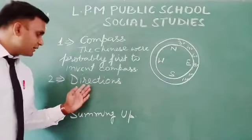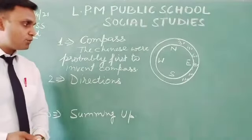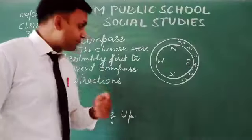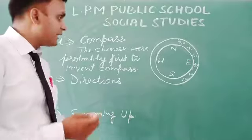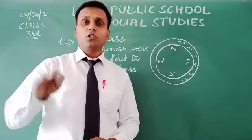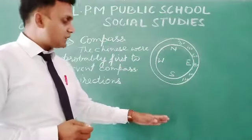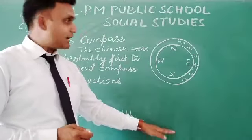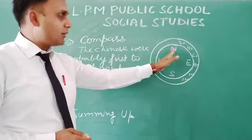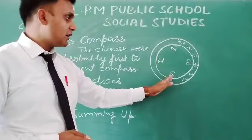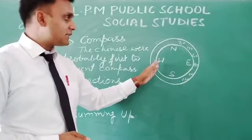Now, come to the second point: directions. When we look at a map on a flat surface, we see that on top of the map it is always the north side, and just below that it is south. As we see in the compass, at the upward position it is north, opposite to north it is south, on the right-hand side it is east, and on the left-hand side it is west.